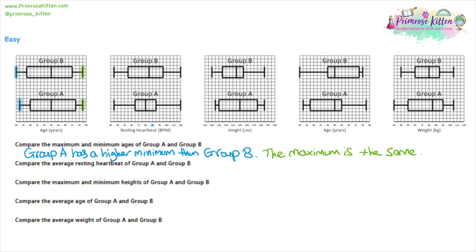Moving on to question two, we've been asked to compare the average resting heartbeat. If asked about averages with a box plot, we are talking about the median — the middle line. In group A it's around 80, but in group B it's at 84. So group B has a higher average. You can write: group B has a higher average resting heartbeat than group A. Being specific about the data involved helps avoid ambiguity.